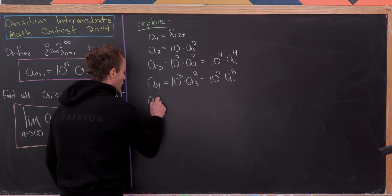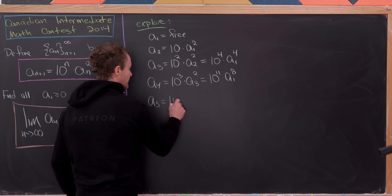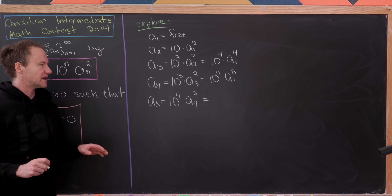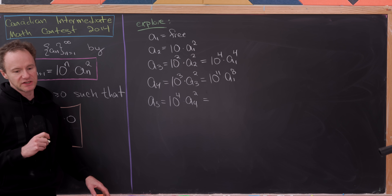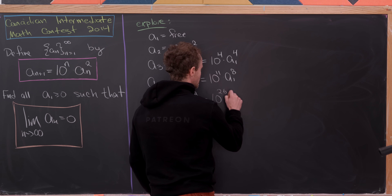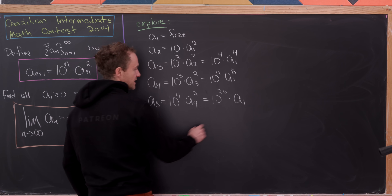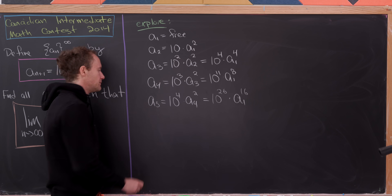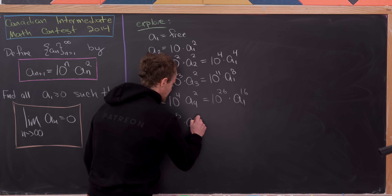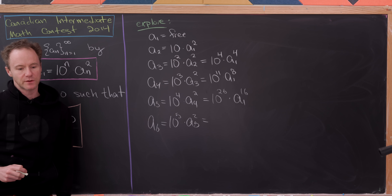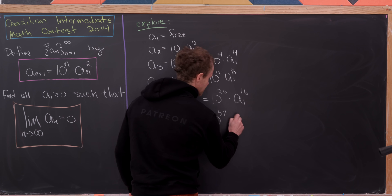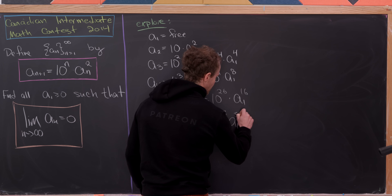Let's calculate a couple more. So a_5 = 10^4 · a_4², which gives us 10^{22} · 10^4 = 10^{26} · a_1^{16}. And then a_6 = 10^5 · a_5², which gives us 10^{57} · a_1^{32}.